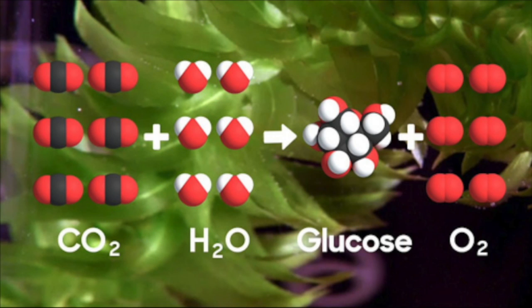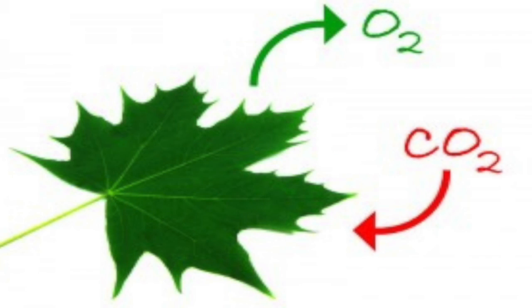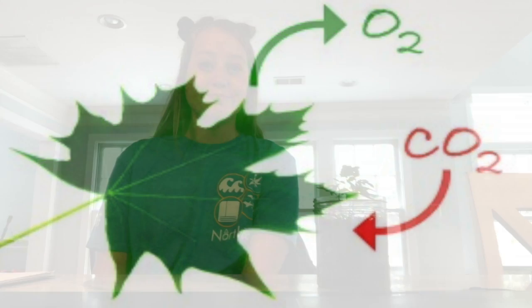Chlorophyll allows our plants to absorb sunlight and uses that energy to convert six molecules of carbon dioxide and six molecules of water into one molecule of sugar and six molecules of oxygen. The plant will utilize the glucose as an energy source and get rid of the byproduct, which is the oxygen, by releasing it into the atmosphere back through the stomata. I wish I could synthesize and create my own form of energy — oh wait, I sort of can.